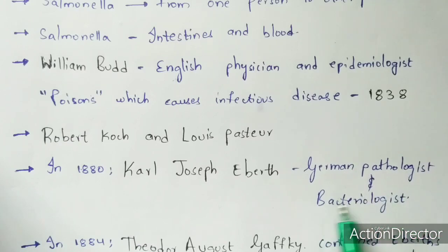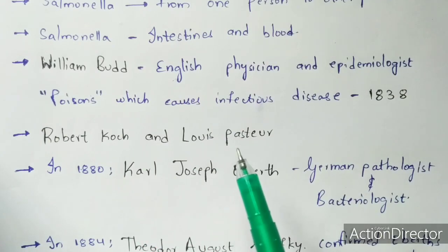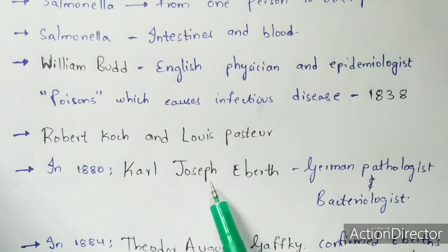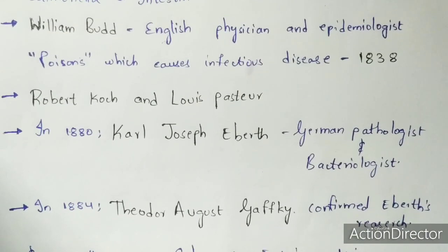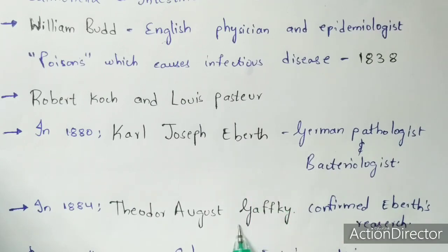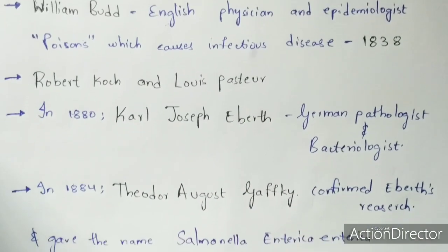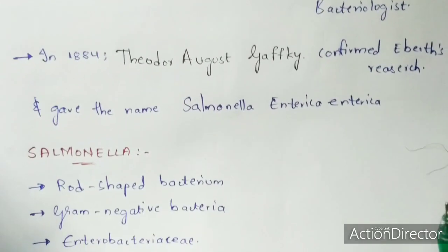In 1880, Karl Joseph Eberth, a German pathologist and bacteriologist, did much research on typhoid fever and identified the bacterium, though he did not name it. In 1884, Theodor August Gaffky confirmed Eberth's research and named the bacterium Salmonella enterica. So this is about the discovery part.